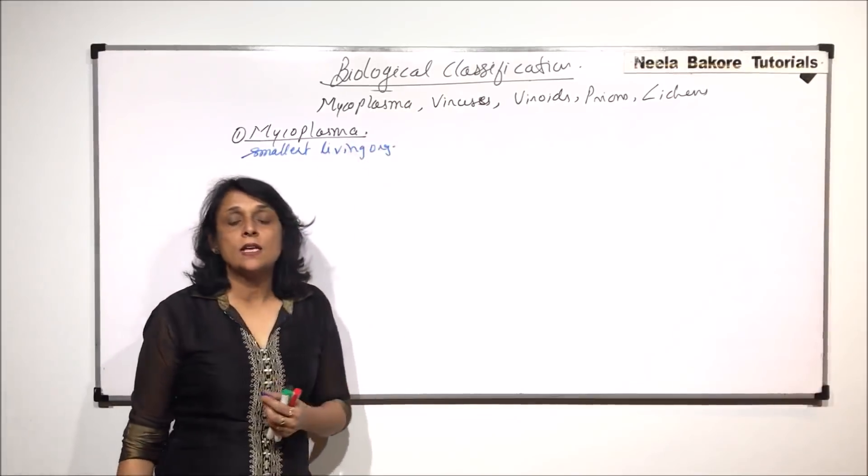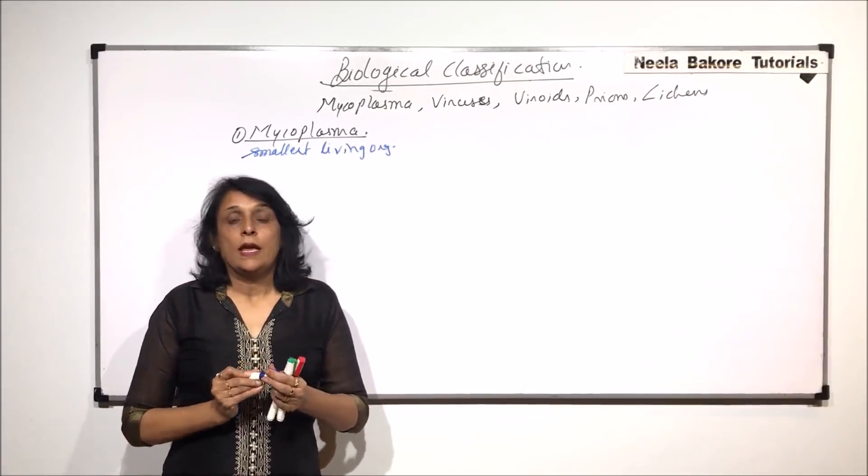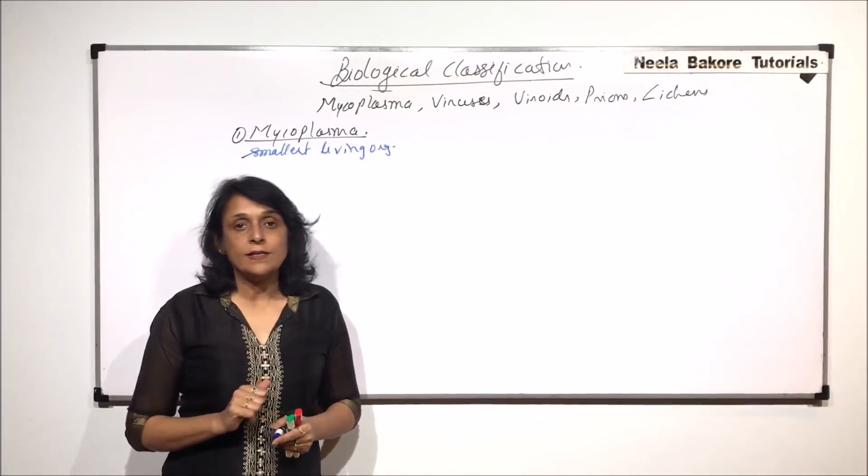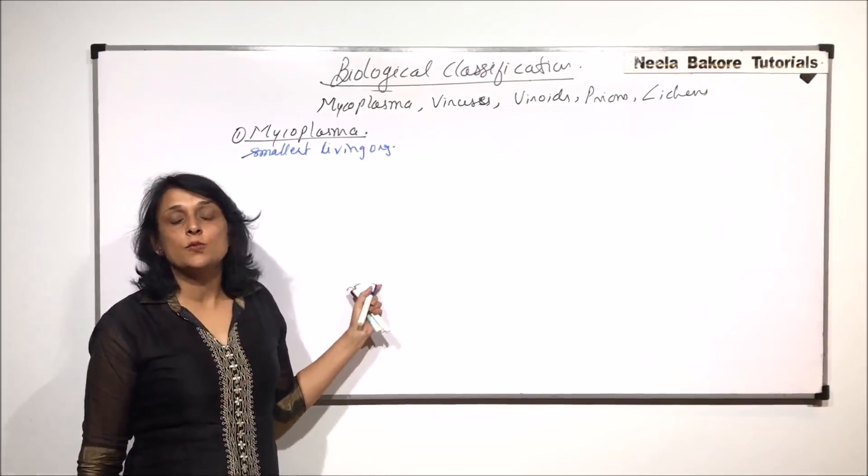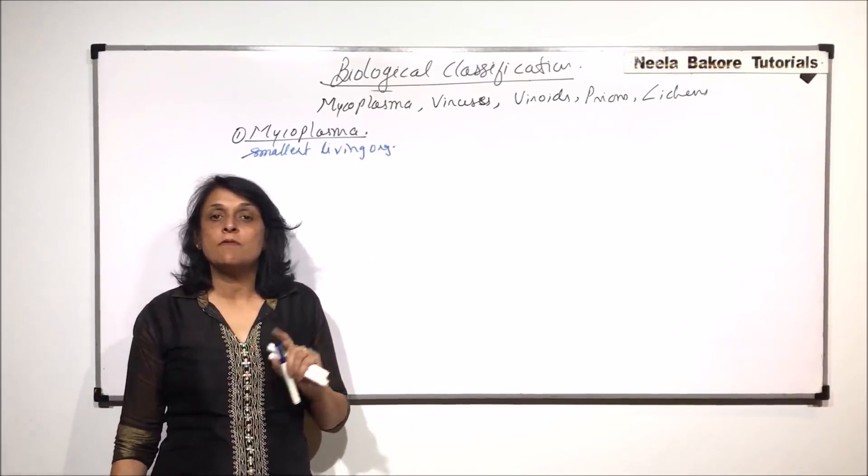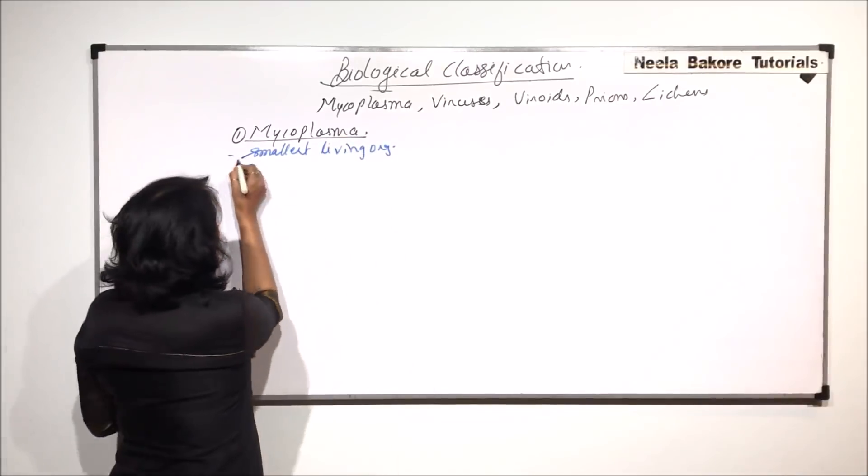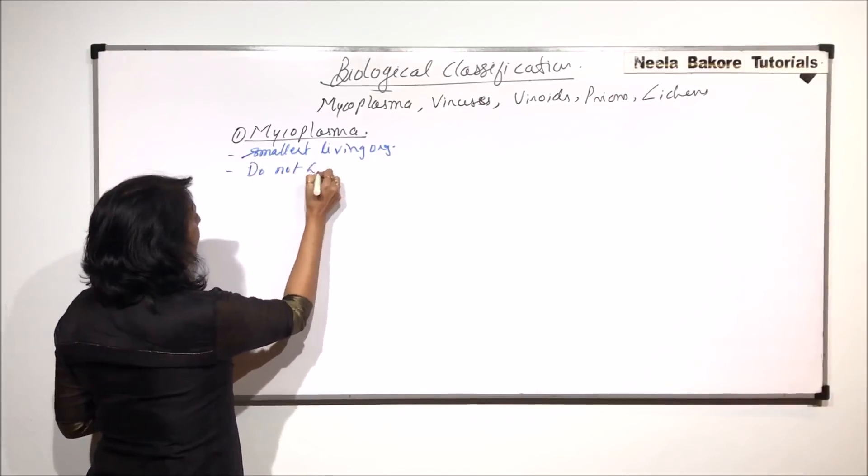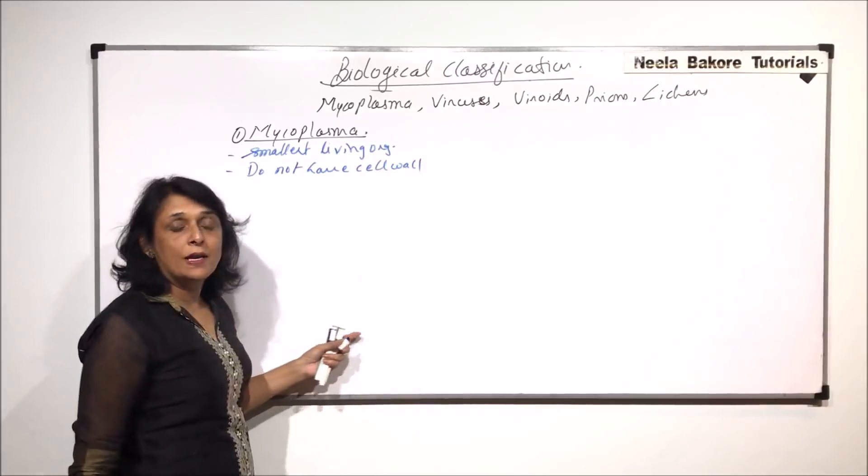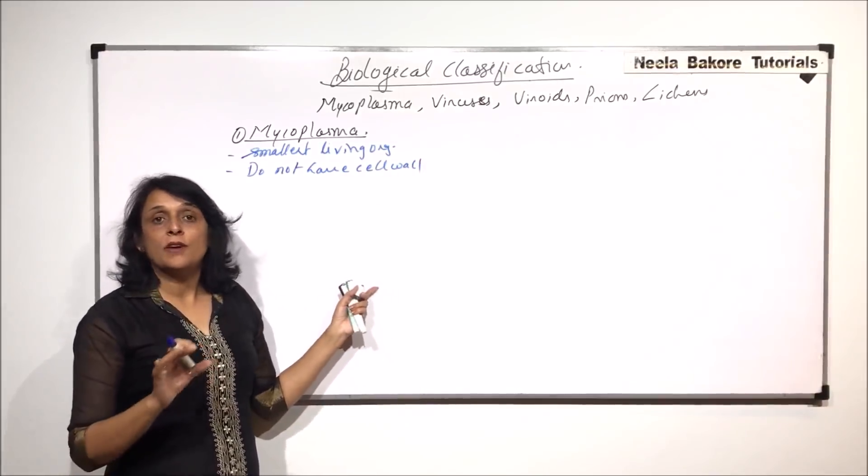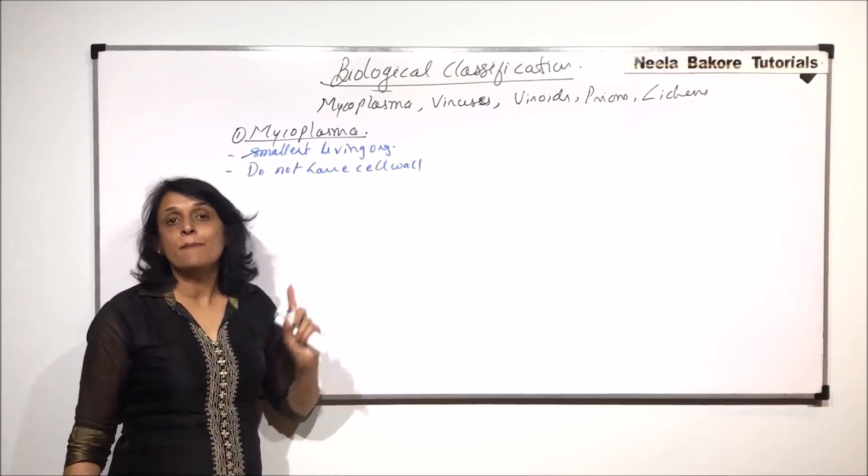When this question is asked, we have to be very careful in reading the question. If the question says which is the smallest living organism, our answer is bacteria. But if they ask which is the smallest living organism without cell wall, our answer is mycoplasma.